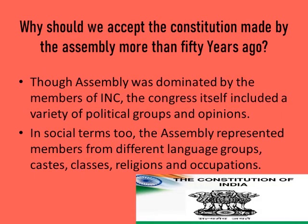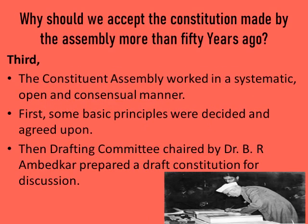Of course, the constituent assembly was dominated by the Indian National Congress, but the Congress itself included a variety of political groups and opinions. The assembly had many members who did not agree with the Congress. In social terms too, the assembly represented members from different language groups, castes, classes, religions, and occupations. From this we get an idea that the constituent assembly had representation of people from different regions and different classes.